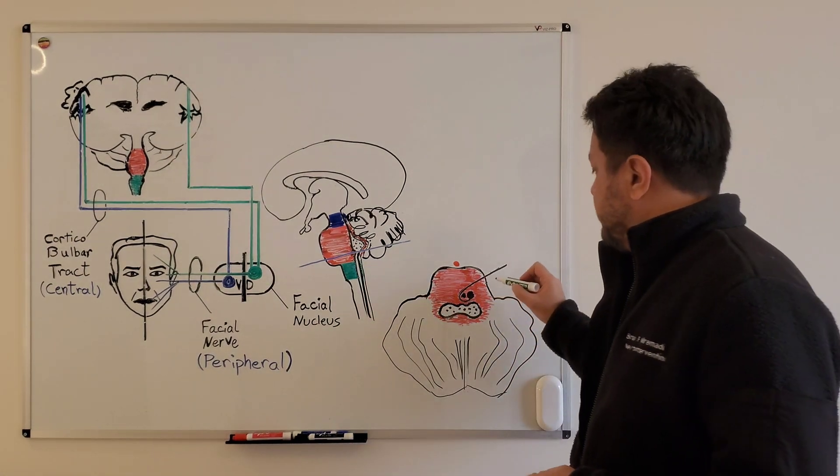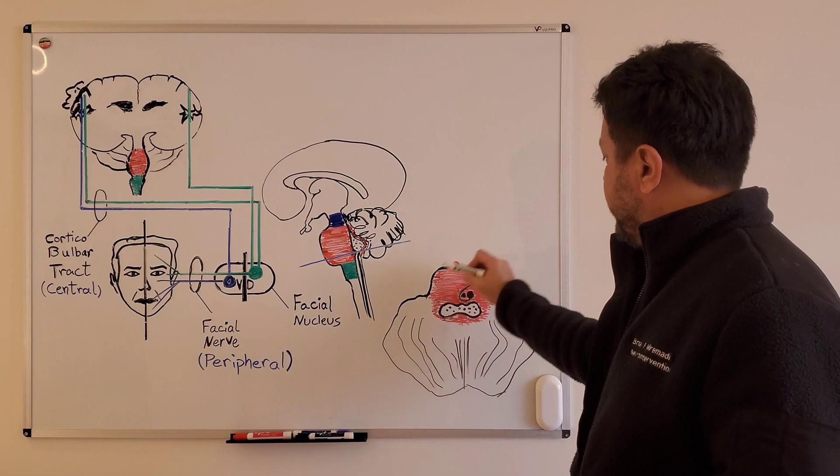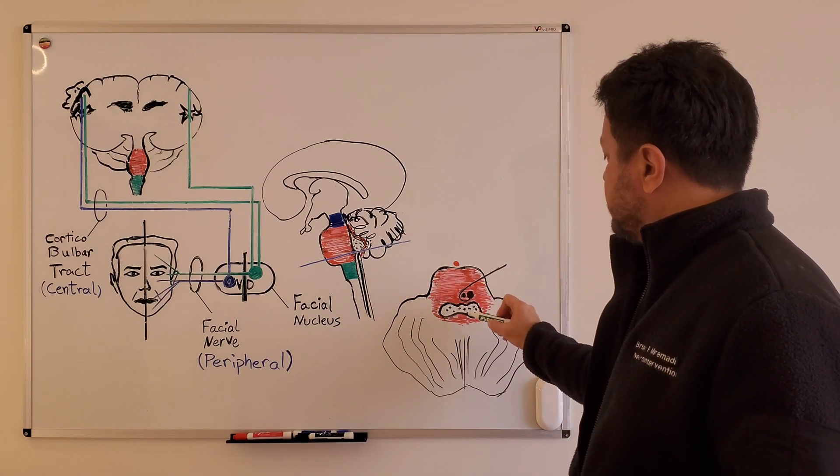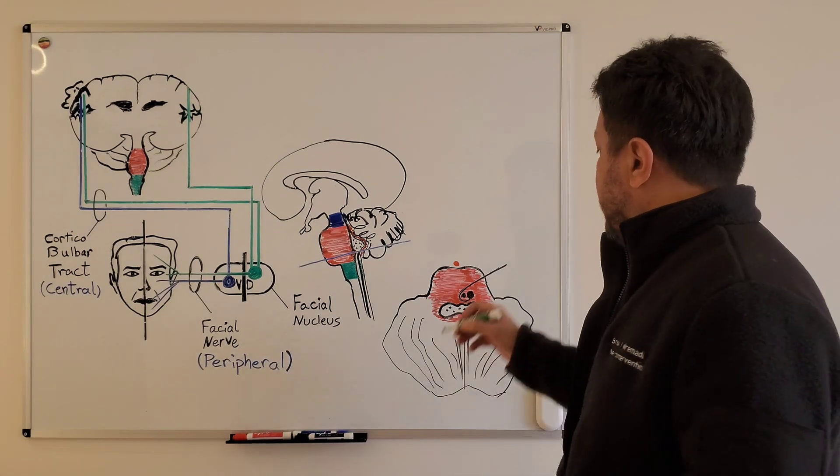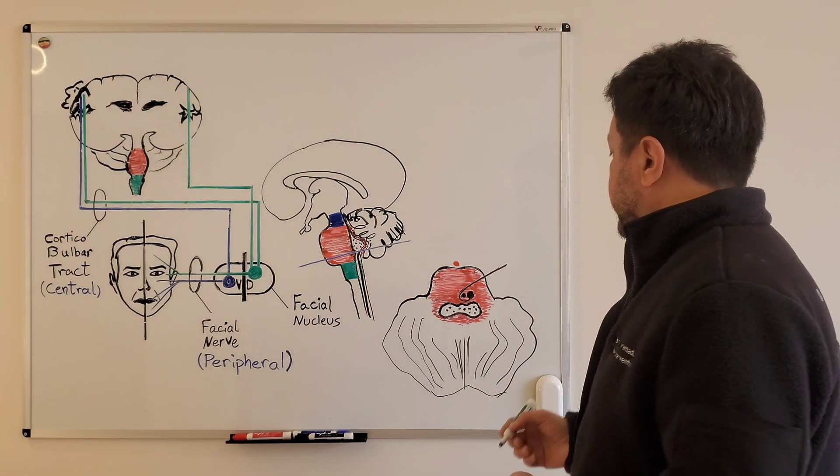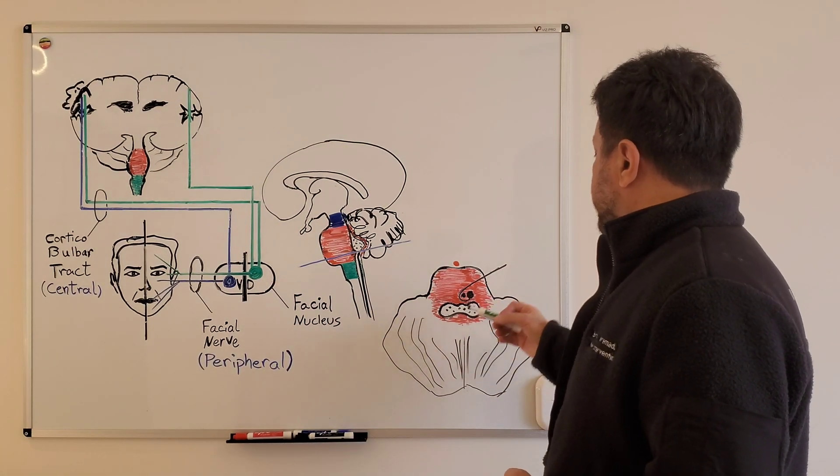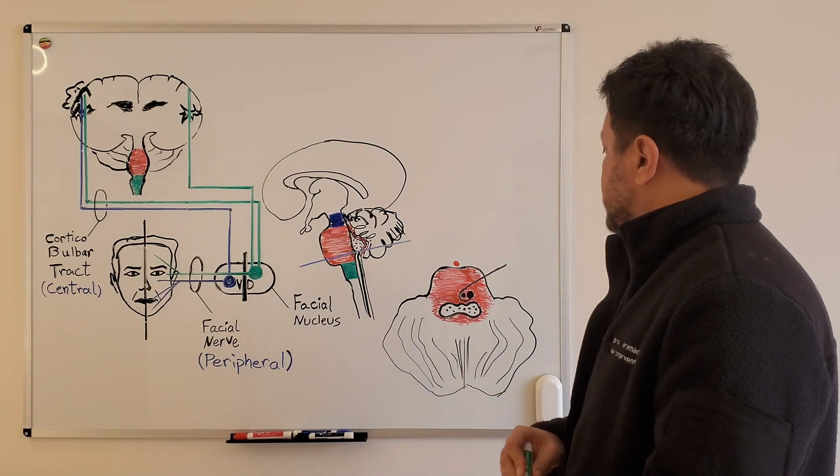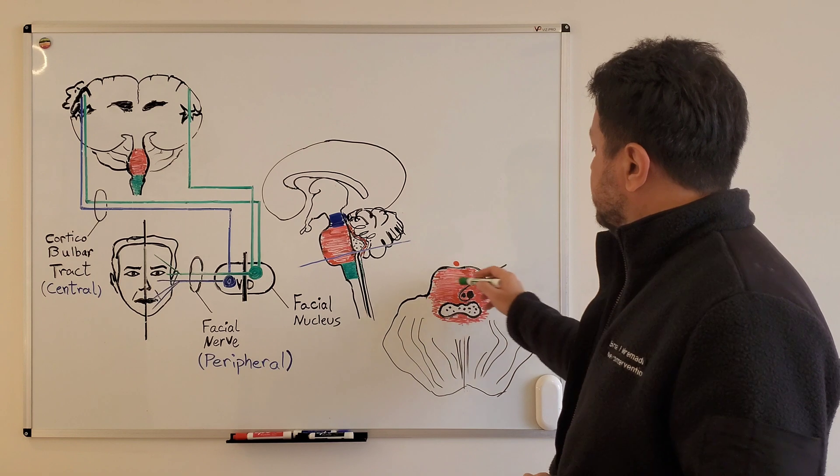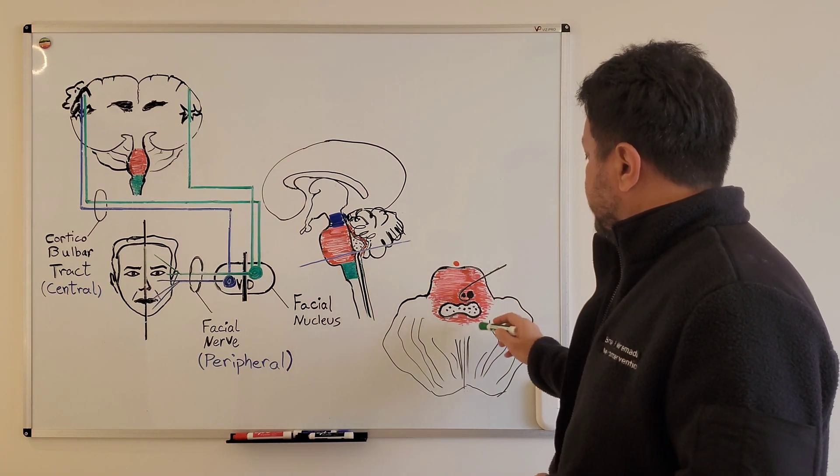Typically what happens is if a stroke, for example, affects the area of the pons, there's going to be other surrounding structures and those will be influenced by the lesion. The two main examples of such scenario are Millard-Gubler syndrome and the Foville syndrome.